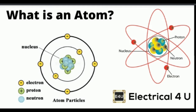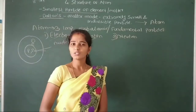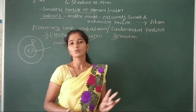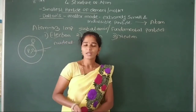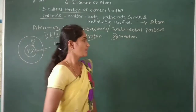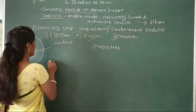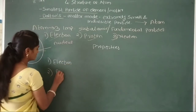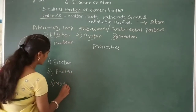Now we will discuss some properties of these 3 sub-atomic particles — that is, properties of electron, proton, and neutron. These properties include: symbol of the particle, charge of the particle, and mass of the particle. The three particles are: 1st — electron, 2nd — proton, and 3rd — neutron.